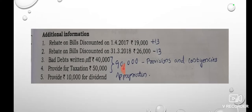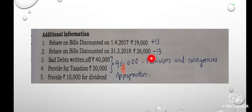Now we have a profit. All the adjustments are added to each item. One item to note is Rebate on Bills Discounted at $42. We also need to add $10,000 for dividend.